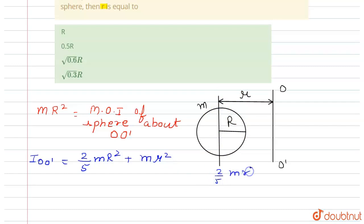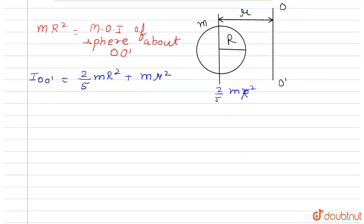It's capital R square. Now by using parallel axis theorem we can write M R square is equal to two by five m r square plus m r square.